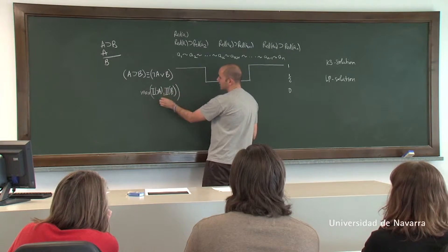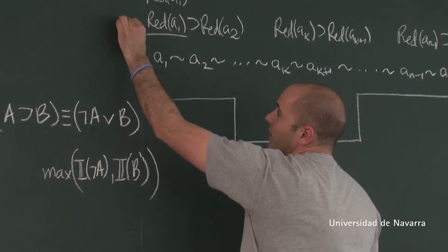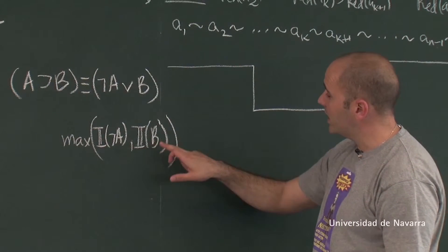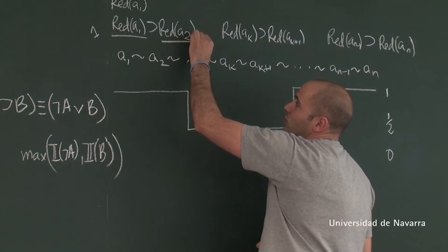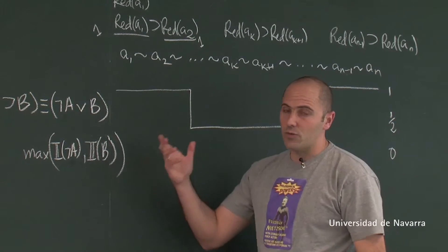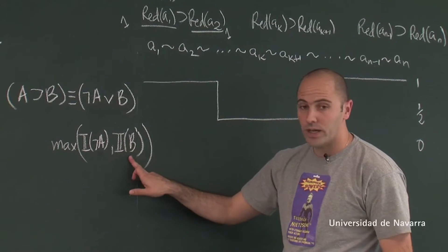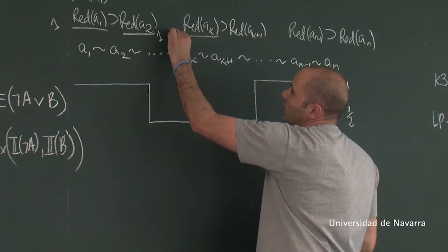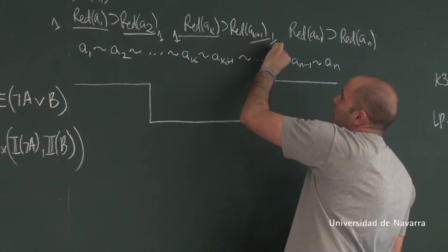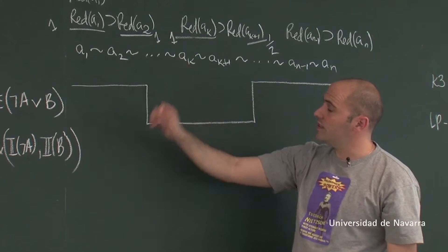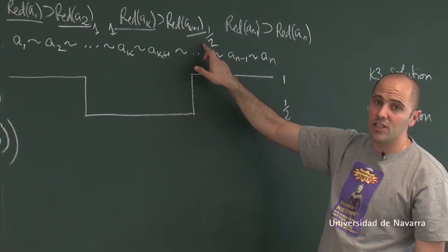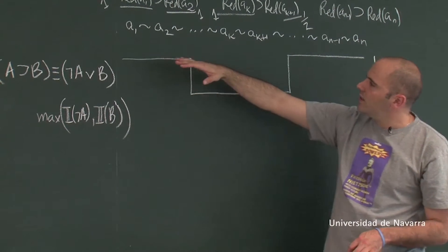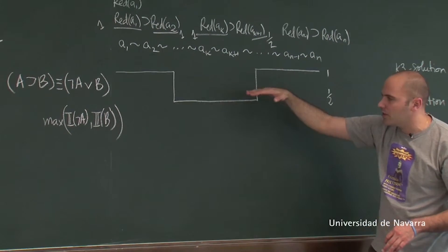At the beginning, the antecedent — this one is red to degree 1 — so its negation takes value 0, but the consequent is red to degree 1, so it takes the maximum value. At some point this one might be red to degree 1 and this one to degree 1, so the negation of the antecedent takes value 0, but the consequent still takes value 1, and the disjunction takes the maximum. So the value of the conditionals never drops to 0.